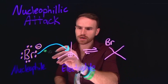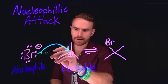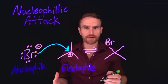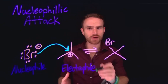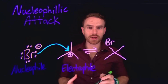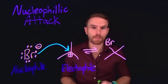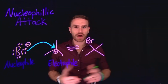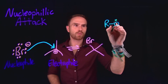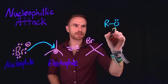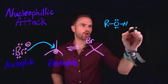When drawing curved arrows, we always start with the tail of the arrow beginning where the electrons are coming from. The head of the arrow is always going to go to where those electrons are being pushed or moved to or transferred to. Another example of this might be an alcohol, which has an oxygen with two lone pairs on it, attacking a carbonyl group.